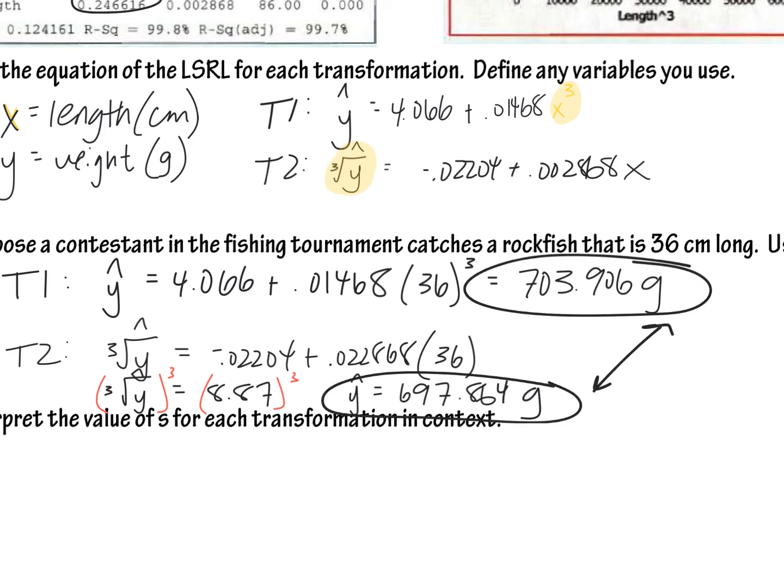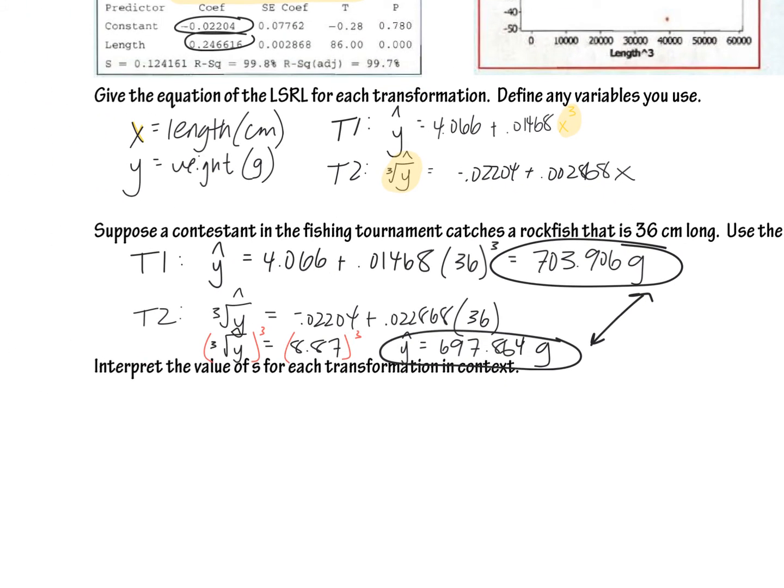Both of those transformations are pretty accurate. You can see that those lines were really, really straight, very strongly, positively, linearly correlated. And when I made a prediction based on that rockfish that was 36 centimeters long, I came really close to the number of grams. There's not much variation between those two.